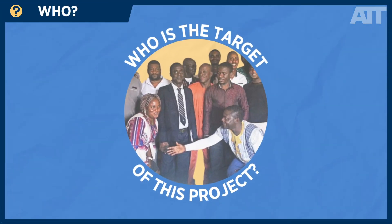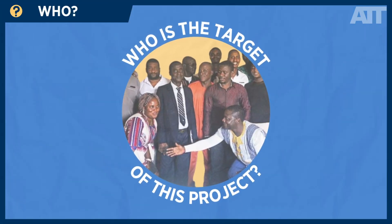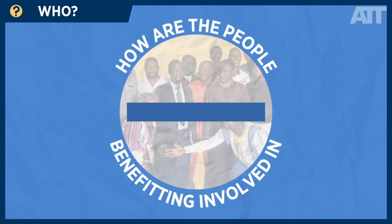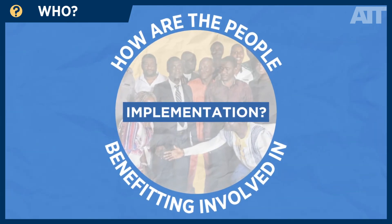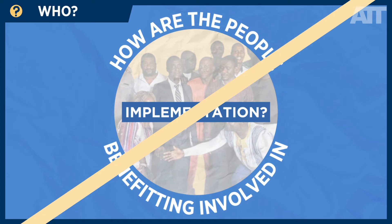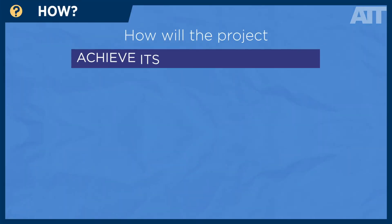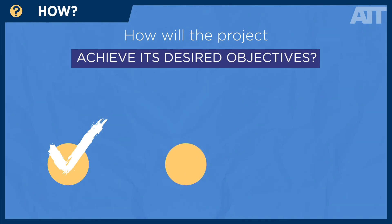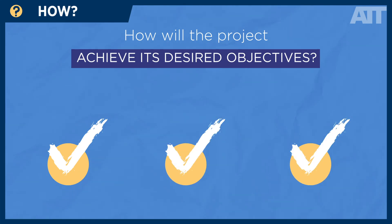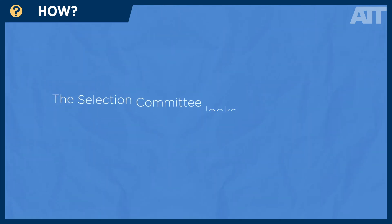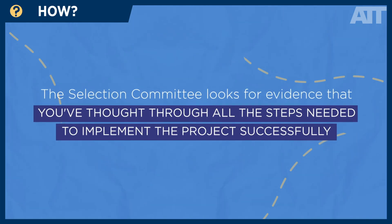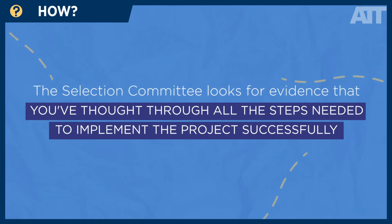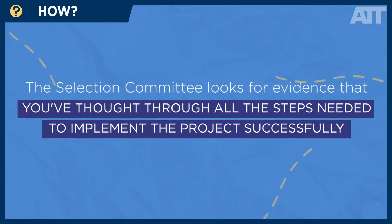Third, who: who is the target of this project, and how are the people benefiting from the project involved in implementation of the treaty? And finally, how: how will the project achieve its desired objectives? What are the main activities involved? The selection committee looks for evidence that you've thought through all the steps needed to implement the project successfully.